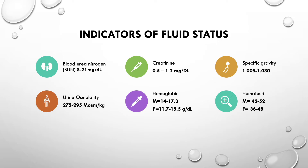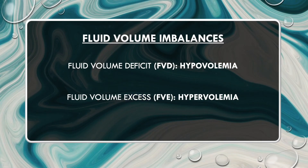The last indicator is H&H — hematocrit and hemoglobin. Values vary by gender, with males having higher values. Hemoglobin is the protein within red blood cells; normal range is 14 to 17.3 g/dL in males and 11.7 to 15.5 g/dL in females. Hematocrit is the ratio of total red blood cells within blood and is measured as a percentage.